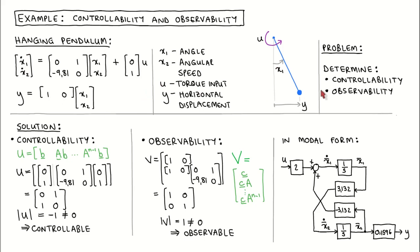Our first task is to determine the controllability and observability of this linearized model. To determine controllability, we construct the controllability matrix U. Since this is a second-order system, the controllability matrix has two columns. The first column is vector B, and the second column is matrix A times vector B, which results in this matrix. We then calculate the determinant of U, which is minus 1. Since it is nonzero, the plant is controllable.